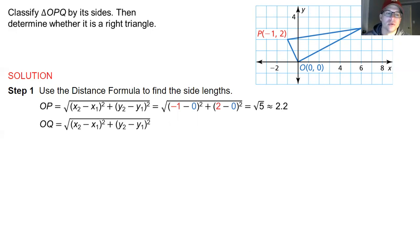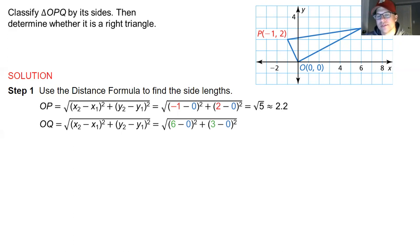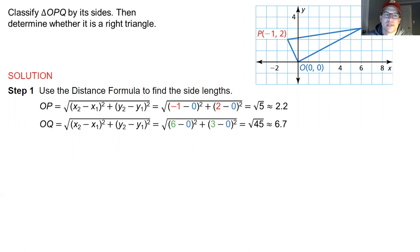We do the same for O and Q. With O at the origin, it's easier for (6,3). You get 6² + 3² = 36 + 9 = 45, and the square root of 45 rounded to the nearest tenth is 6.7.